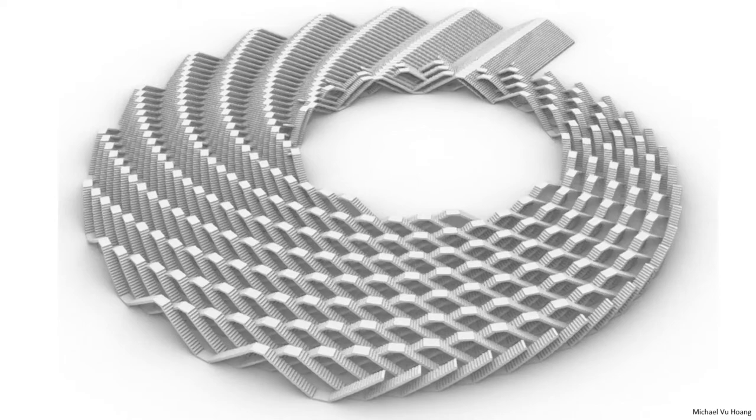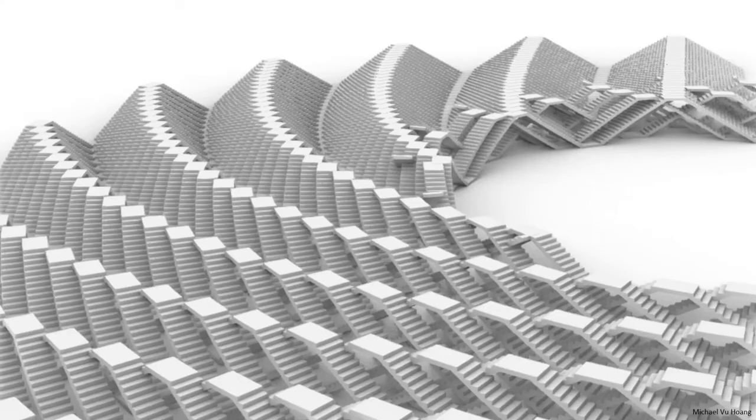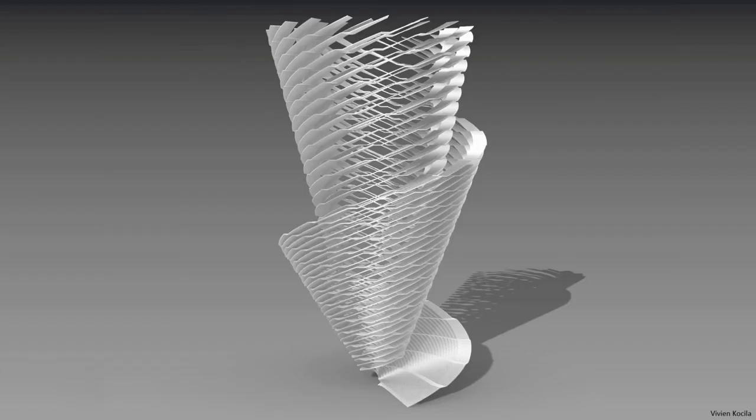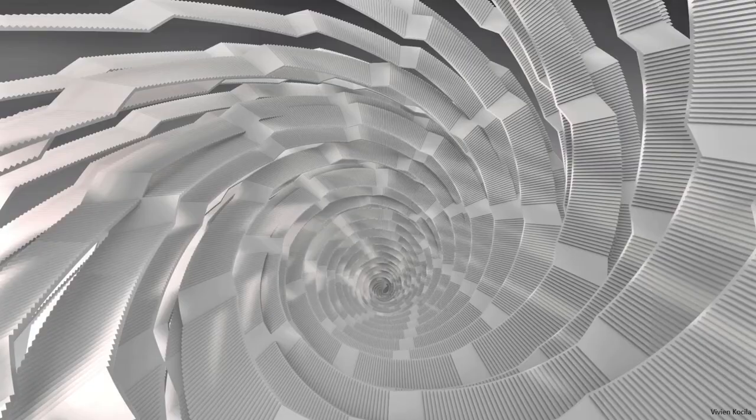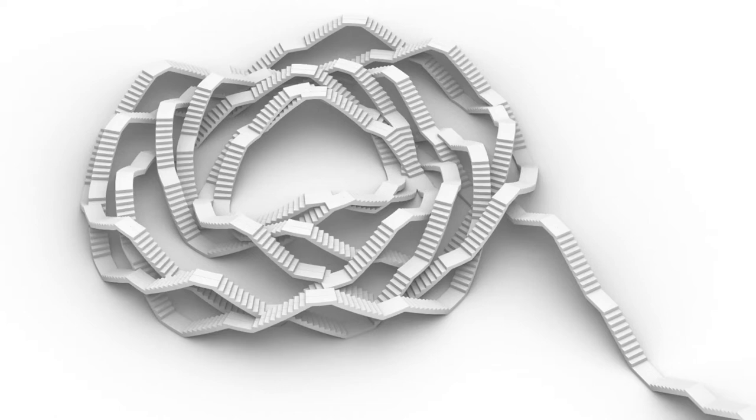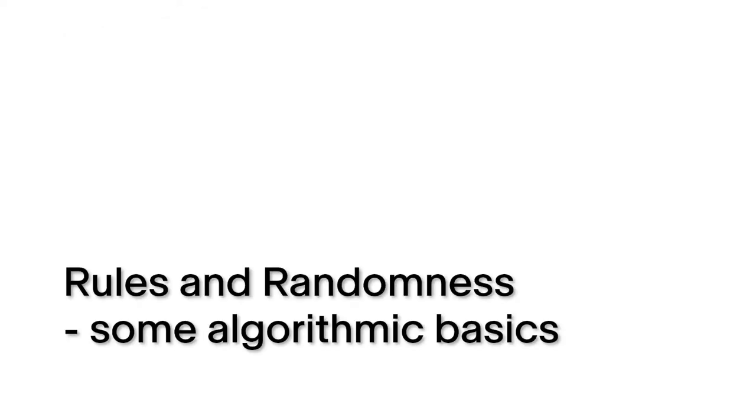So far, we've looked at parametric models. We've seen that they can be predictable, as in the case of the Maison Domino, or pretty fantastic, as in the case of the stairs. Now we'll look at some other generative methods and see how they grade complex forms. Many of them are so-called rule-based systems.